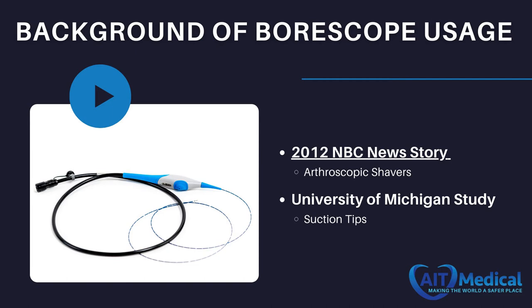Upon inspection of the facility's shavers with a borescope, the shavers were found to have bone and tissue in the internal channels. In 2011, Jahan Azizi, a risk management clinical engineer at the University of Michigan Health System, examined 350 surgery-ready suction tips that had been cleaned according to the manufacturer's instructions. Upon inspection with a borescope, all 350 suction tips contained blood, bone, tissue, or rust. After taking those 350 suction tips back through the cleaning process according to the manufacturer's IFU, all but seven still contained debris.